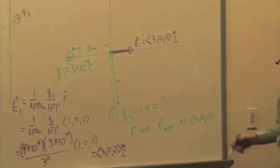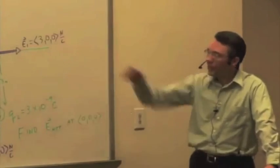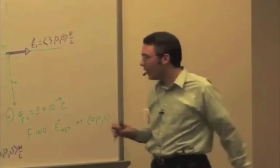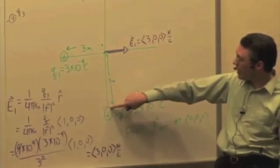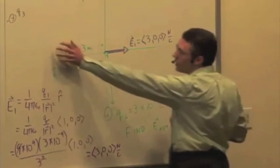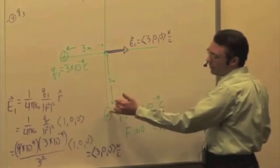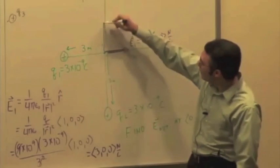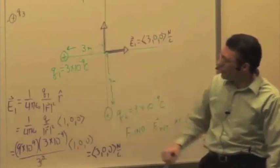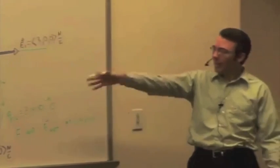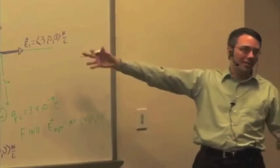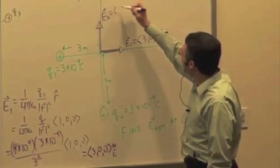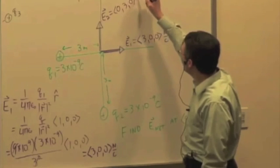Okay. Without doing any calculations at all, what are the components of E2? 0, 3, 0, right? It's got to point away from this second positive charge. Essentially, we're ignoring the presence of this guy for right now. Just think about the field due to Q2 at this location. It's a positive charge, and so it points away from that positive charge. So, it's pointing in the positive Y direction. The charges are the same. The distances are the same. The magnitude's got to be the same, right? So, E2 is 0, 3, 0 newtons per coulomb.